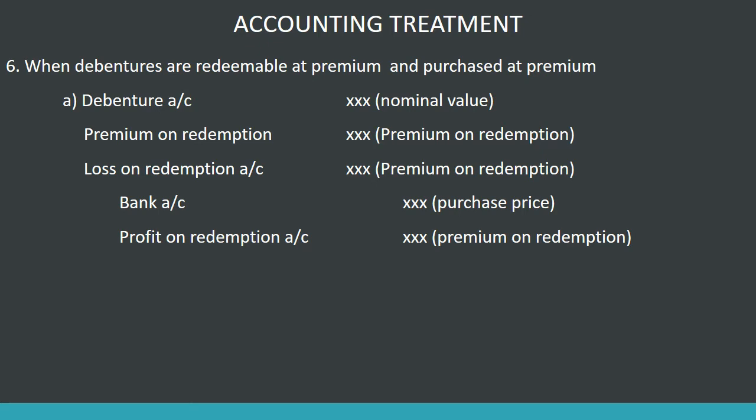Debenture account debtor, premium on redemption account debtor, to bank — that's why we call redemption: premium on redemption debtor to bank. What we do is account for the loss and profit. If we call the profit on redemption, we will save the amount of the percentage. That is why we call the profit. Then we debit and credit to bank account, to profit on redemption account. We call the premium on redemption debtor to bank account, to profit on redemption.